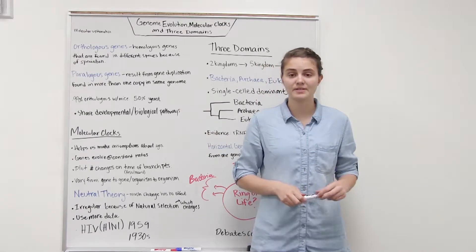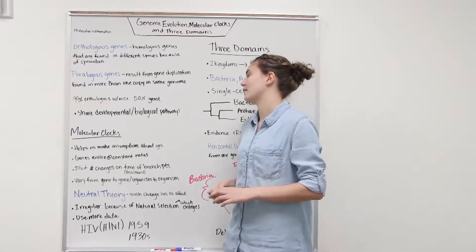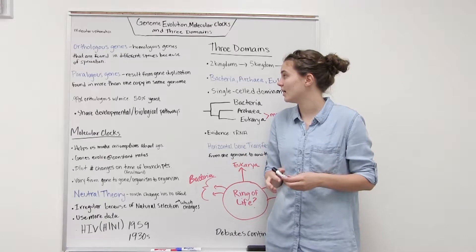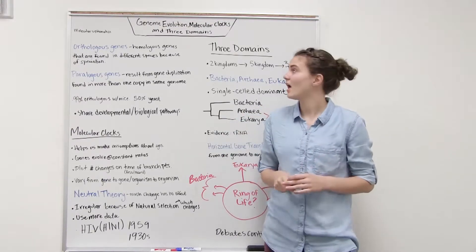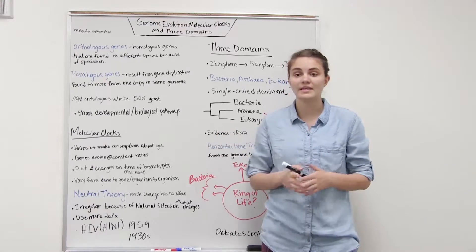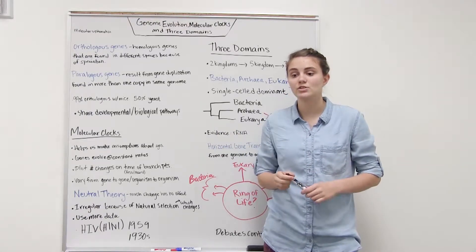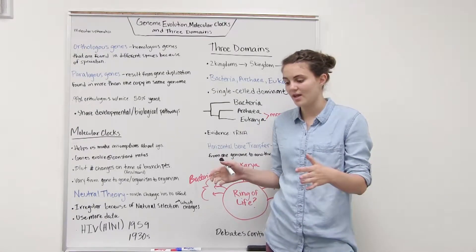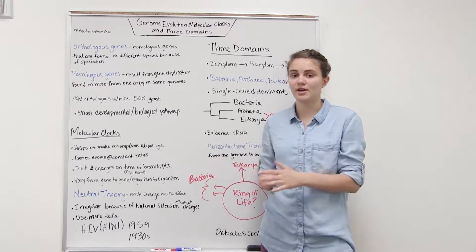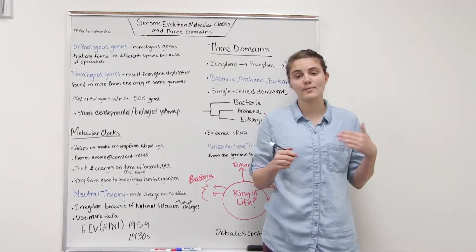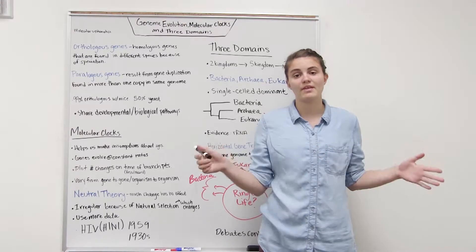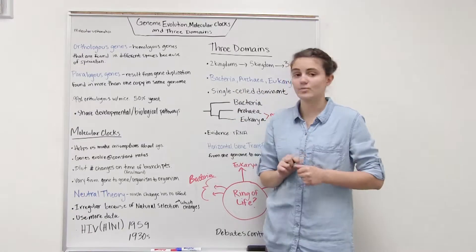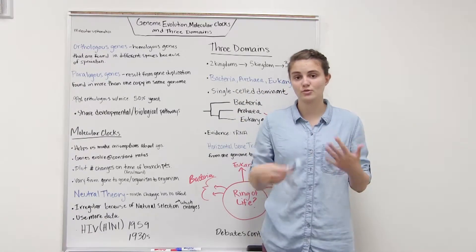Paralogous genes are a little bit different. They result from gene duplication found in more than one copy in the same genome. What happens here is that some gene in the nucleotide sequence or in the genome is duplicated. In one species you see this one gene and another species you see kind of these six genes that are all very similar. Maybe what happened is they both share a common ancestor that had that one gene but then it was duplicated and there were some changes in those genes. Paralogous genes are useful because they allow for more genetic changes because you now have more genes.